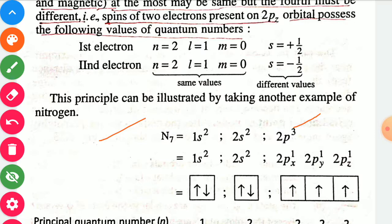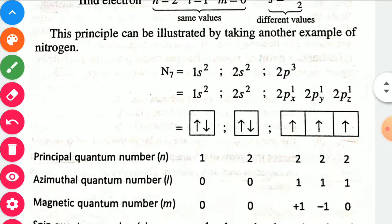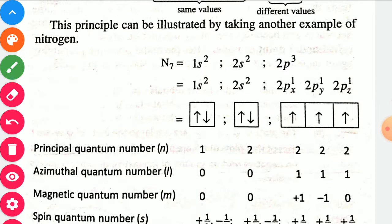For the 2p3 electrons: one electron in px gives 2px1, one in py gives 2py1, and one in pz gives 2pz1. For 1s2, the principal quantum number is 1. For 2s2 and 2p, the principal quantum number is 2. For the azimuthal quantum number when n equals 1, l value is 0 to n minus 1, which equals 0.